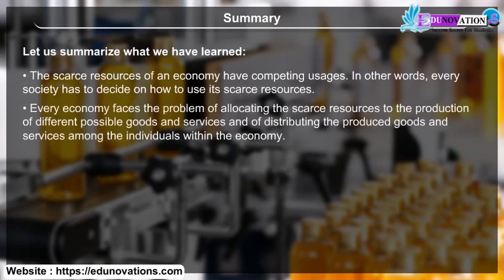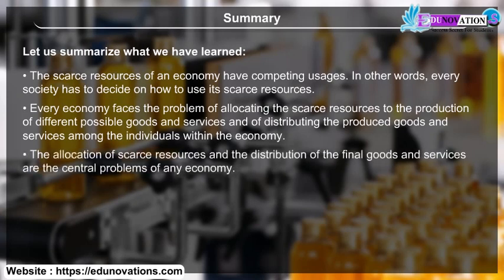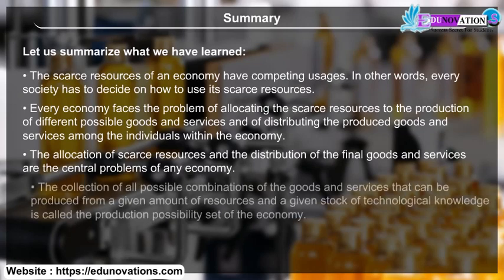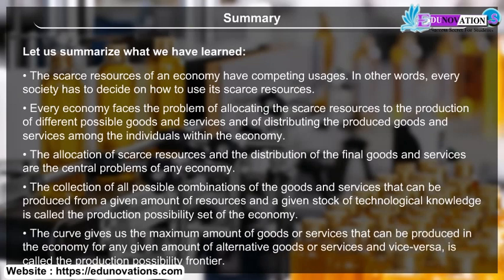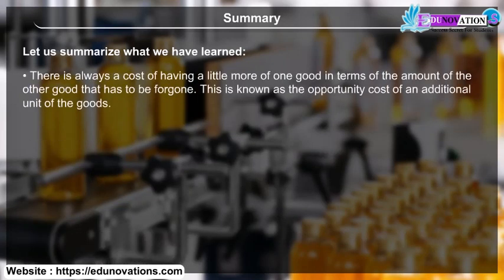Every economy faces the problem of allocating scarce resources to the production of different goods and services, and of distributing those goods and services among individuals. The allocation of scarce resources and distribution of final goods and services are the central problems of any economy. The production possibility set is the collection of all possible combinations of goods and services that can be produced from a given amount of resources and a given stock of technological knowledge. The production possibility frontier is the curve showing the maximum amount of one good or service that can be produced for any given amount of an alternative good or service. There is always a cost of having more of one good in terms of the other good foregone, known as the opportunity cost.